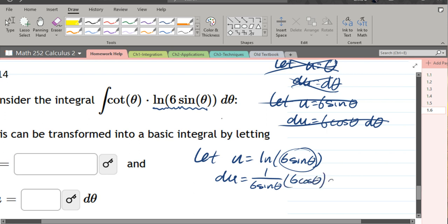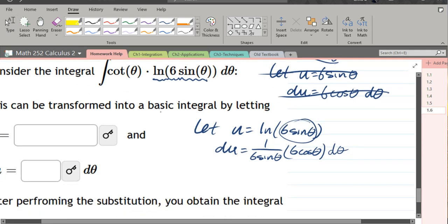And don't forget d theta. Your sixes cancel. So we got cos theta over sine theta d theta.